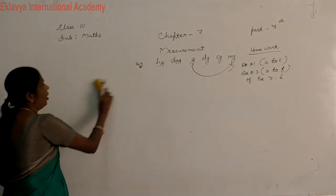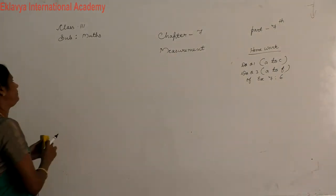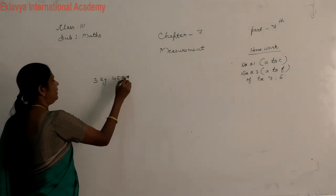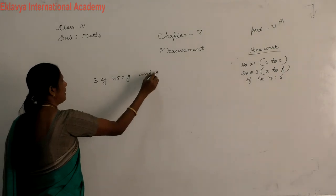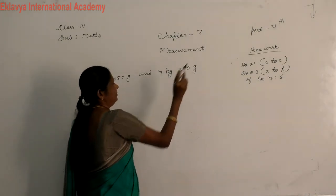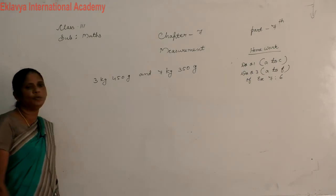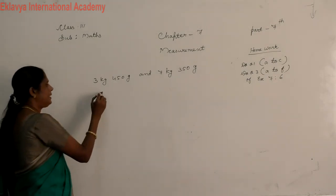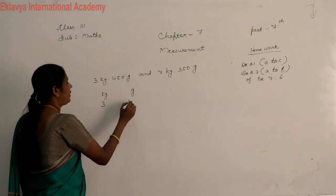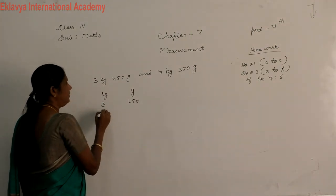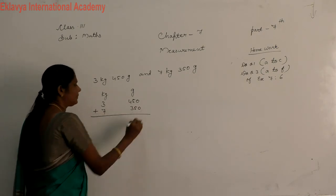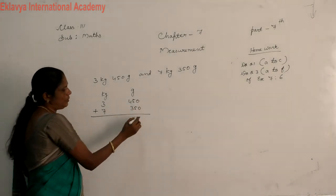Addition of weight. 3 kg, 450 gram and 7 kg, 350 gram. First, you make two columns, kg and gram. 3, 450, then 7, then 350. Now, we add this number. 0 plus 0, 0.